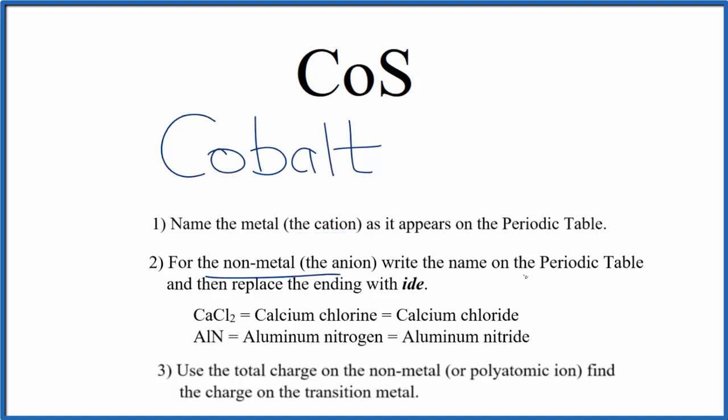Next we'll write the name for the nonmetal as it appears on the periodic table. S, that's sulfur. And so far we have cobalt sulfur for the name, but now we cross out this UR and change it to IDE. And that gives us the name cobalt sulfide.